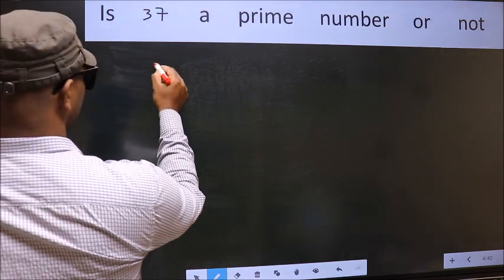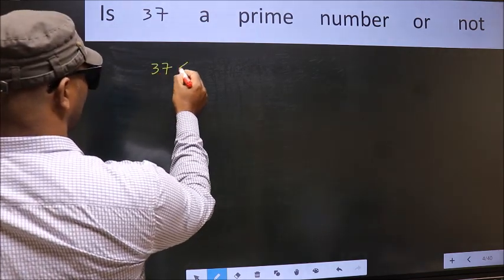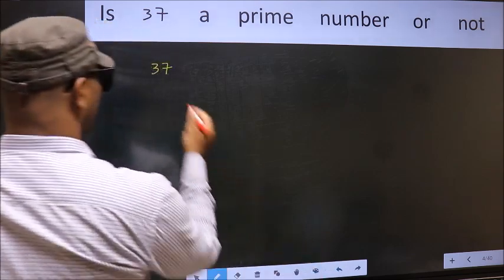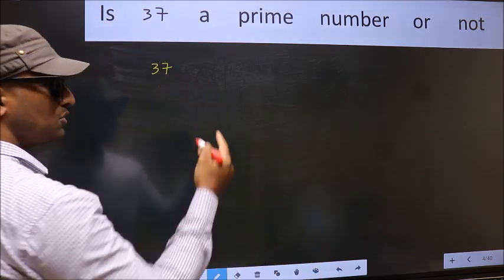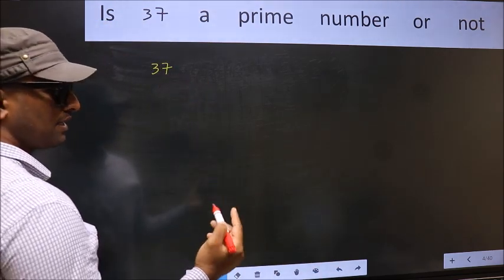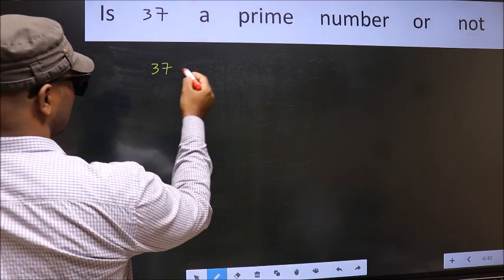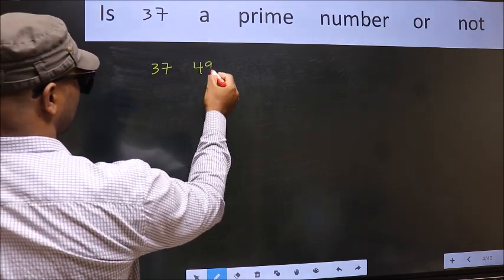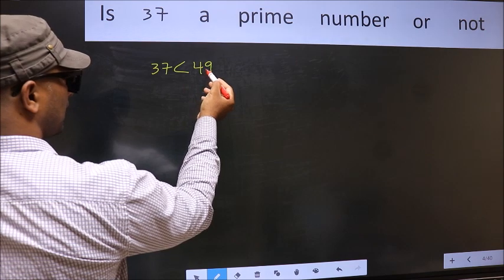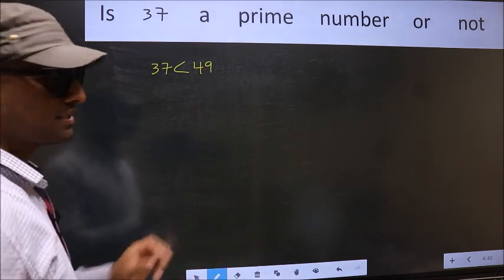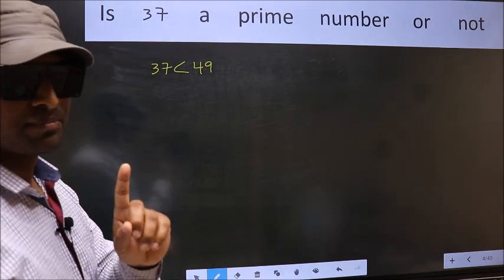Given number is 37. This is close to which perfect square number? This is close to 49, a perfect square number. This is your step 1.